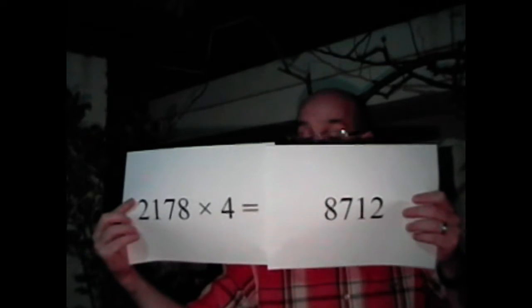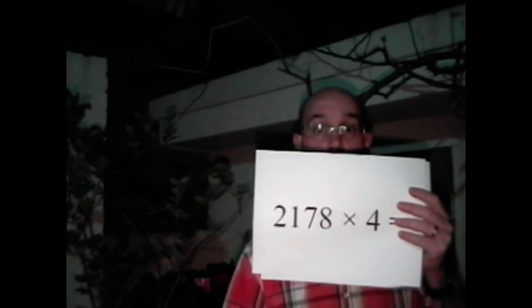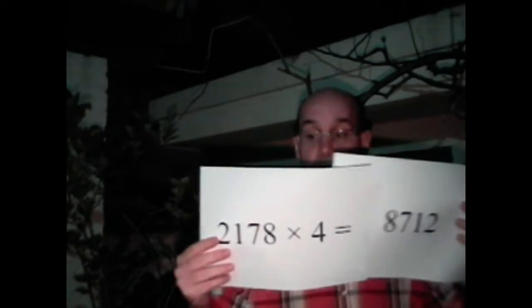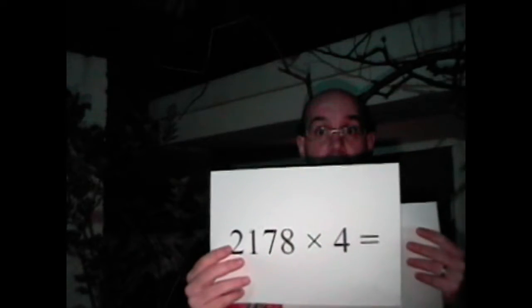You have 2178, and the other one you also have 2178 — which means that when you multiply this number by 4, you actually reverse it. You reverse it this way.